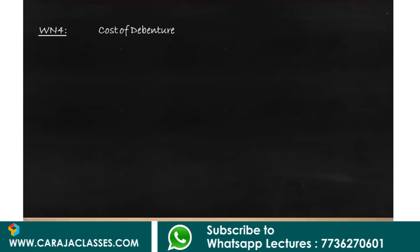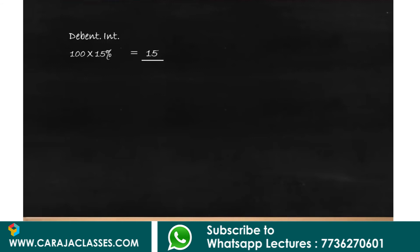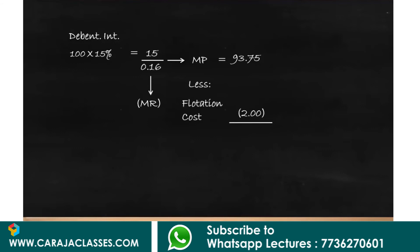For cost of debentures, there is a twist: the coupon rate is 15 percent but the market rate is 16 percent. Since the company offers at a discount, 15 percent on face value of 100 equated with a market rate of 16 percent gives a market price of 93.75. After deducting flotation cost of 2, the net proceeds from debenture is 91.75.